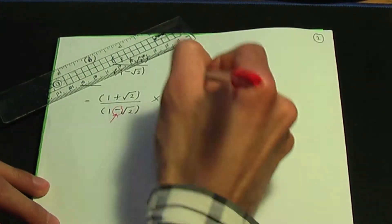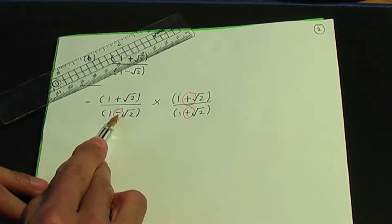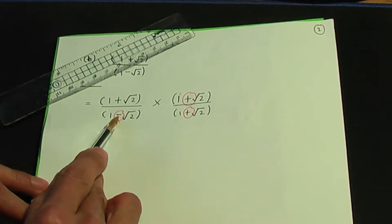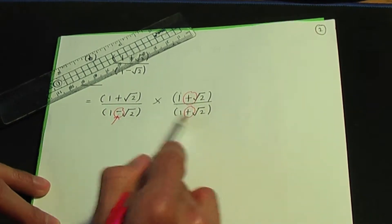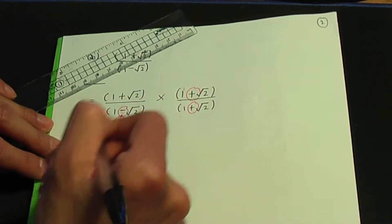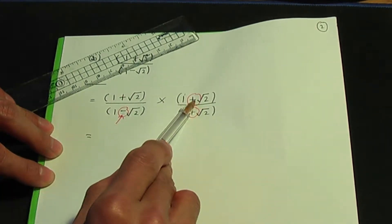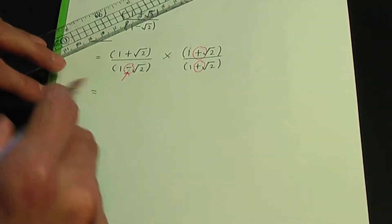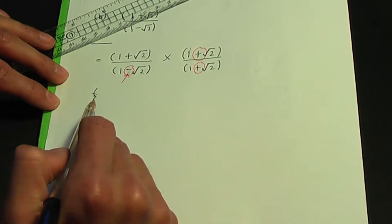Remember the idea: look at the sign in the middle of the denominator term and reverse that sign. If it's a minus, reverse it to plus. If it's a plus, reverse it to minus. Now we need to tidy this up by multiplying the top two brackets and then the bottom two brackets. Let me multiply the bottom two as a side calculation: one minus root two by one plus root two.